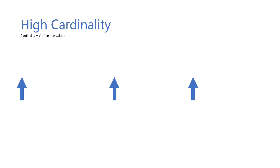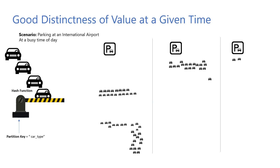Next thing to consider is having a high cardinality. Having a high cardinality means having a high number of unique values. The more number of unique values you have, the higher the number of logical partitions and the better the uniformity. Finally, it is important to have good distinctness of values at a given time, also known as distinctness per second.